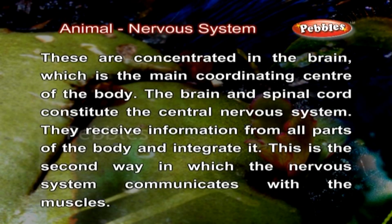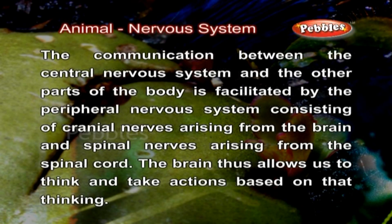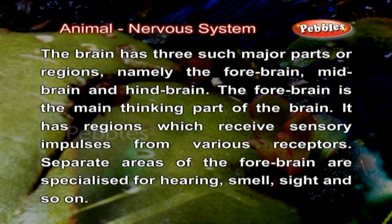They receive information from all parts of the body and integrate it. The communication between the central nervous system and the other parts of the body is facilitated by the peripheral nervous system, consisting of cranial nerves arising from the brain and spinal nerves arising from the spinal cord. The brain thus allows us to think and take actions based on that thinking. The brain has three major parts or regions: the forebrain, midbrain and hindbrain.